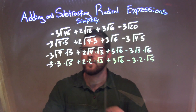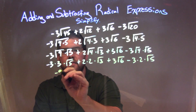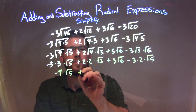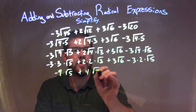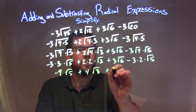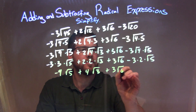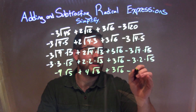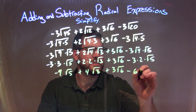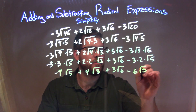Simplify again. Negative 3 times 3 is negative 9, so negative 9 square root of 5, plus 2 times 2 is 4 square root of 3, plus 3 square root of 6, and then 3 times 2 is 6, so minus 6 square root of 5.